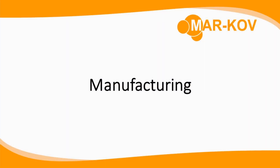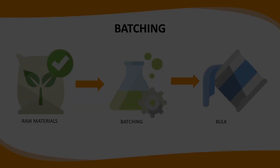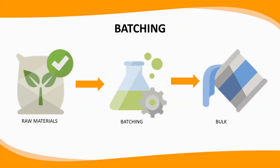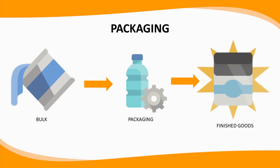Today we will cover how the typical manufacturing process is completed in Markov. Manufacturing in Markov is completed through the batching and packaging programs. The batching programs, when executed, create the bulk product, whereas the packaging programs, when executed, specify how the bulk product will be packaged for sale.